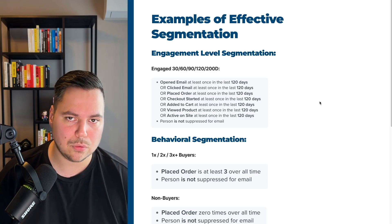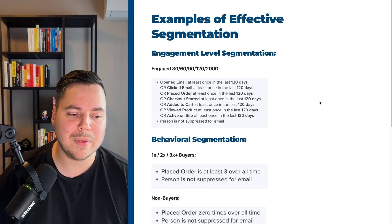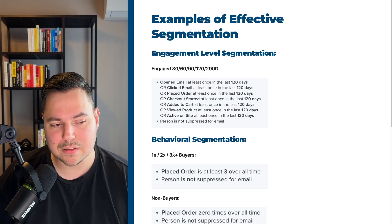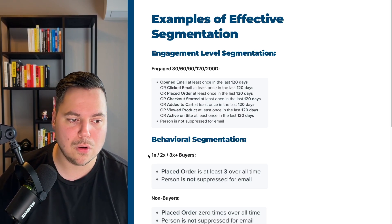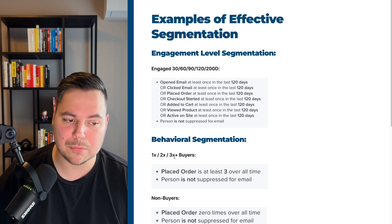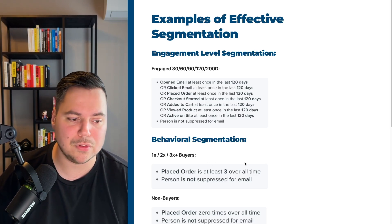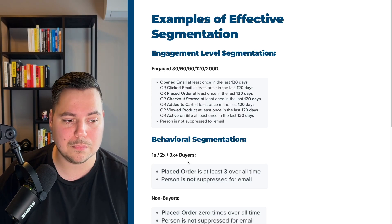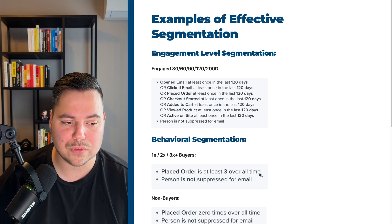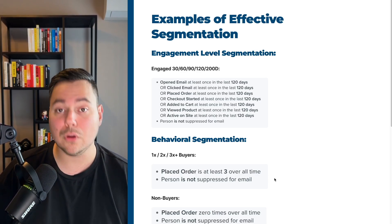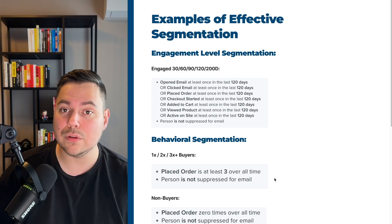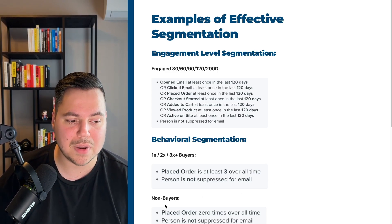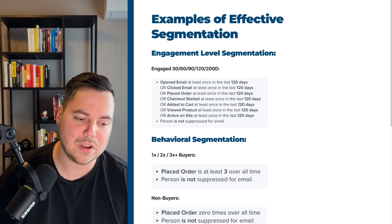For behavioral segmentation, I recommend separating customers by number of purchases: first-time buyers, two-time buyers, and three-or-more-time buyers. For a three-or-more-times segment, use: placed order at least three times overall and person is not suppressed. You can also make a non-buyer segment, which is great for nurturing people toward their first purchase — use: placed order zero times overall and person is not suppressed.